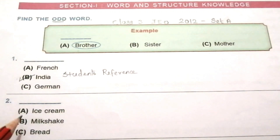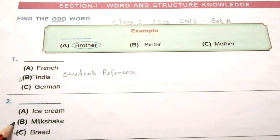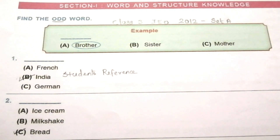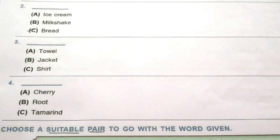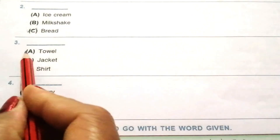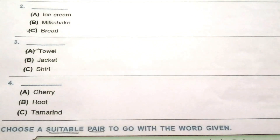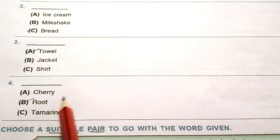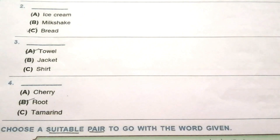Question 2: ice cream, milkshake, bread. The answer is C, bread. Ice cream and milkshake are milk products; bread is not a milk product. Question 3: towel, jacket, shirt. The odd one out is A, towel. Question 4: cherry, root, tamarind. The odd one out is B, root. Cherry and tamarind are fruits; root is not a fruit.